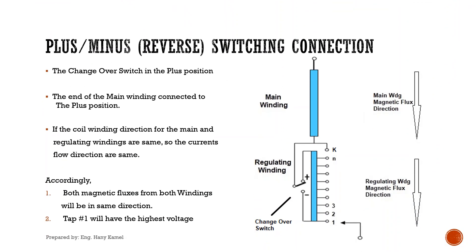For plus-minus, or reverse switching connection: if the changeover switch is in the plus position, the end of the main winding is connected to the plus position. If the coil winding direction for the main and regulating windings are the same, the current flow directions are the same. Accordingly, both magnetic fluxes from both windings will be in the same direction. In this case, tap number 1 will have the highest voltage.